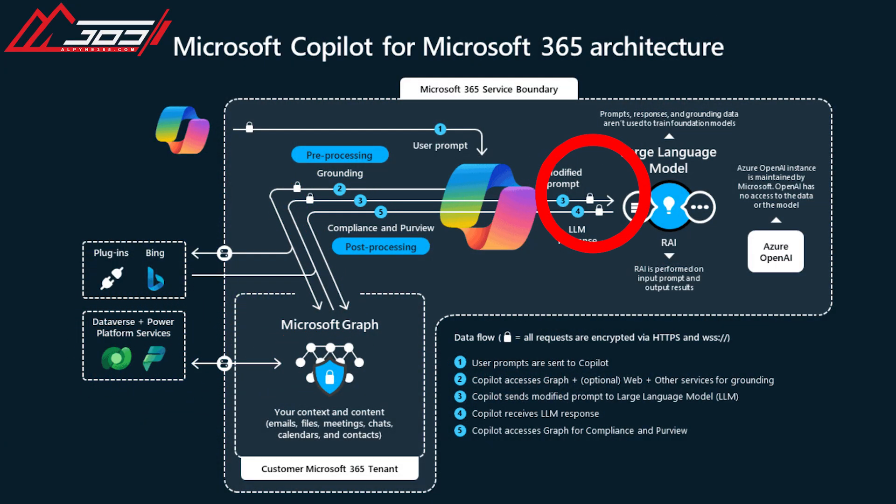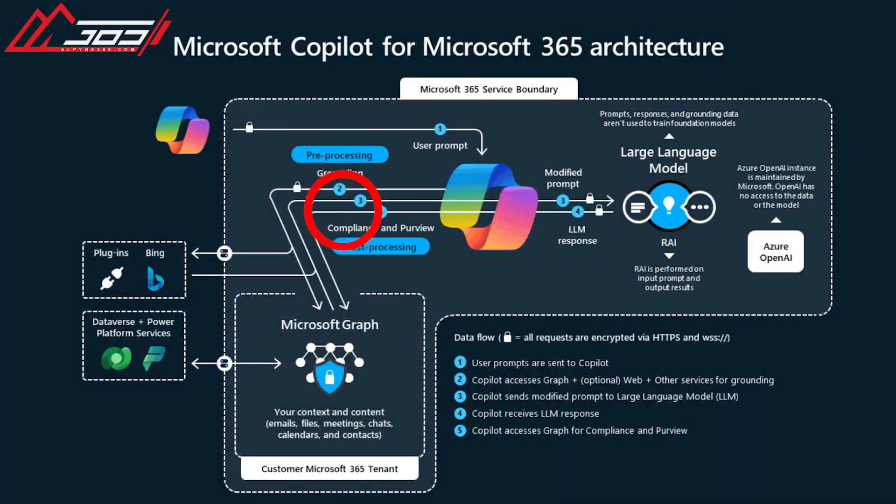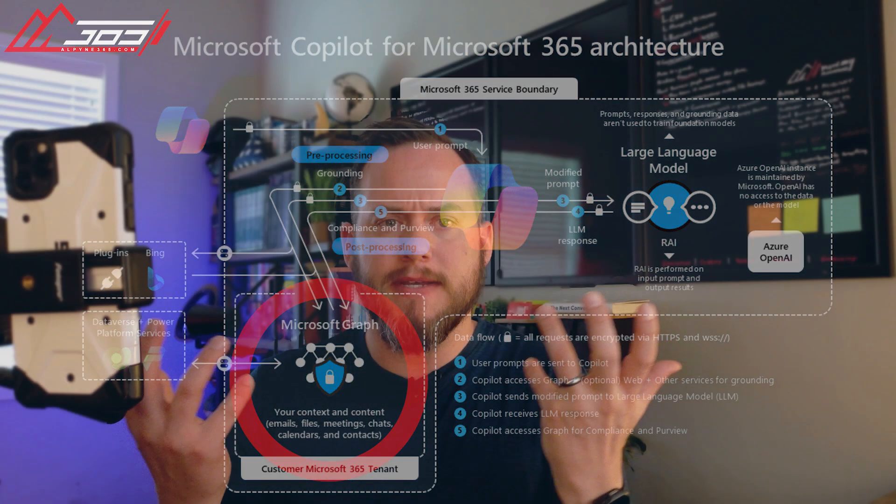Step three is where it sends a modified prompt to the actual large language model. The large language model is the real guts of this — this is where the magic happens. It hits the large language model, does its magic, and then sends back a response based on all the input it's received. After the response is generated, if it's a business, it'll go back and check for compliance to make sure it's not sharing information it shouldn't. And then there's your response — that's how it works in the back end.